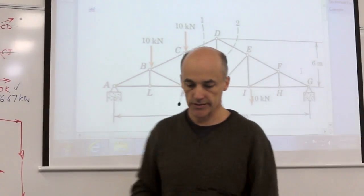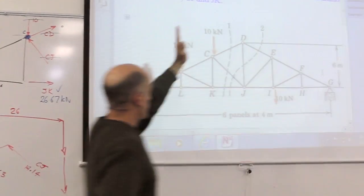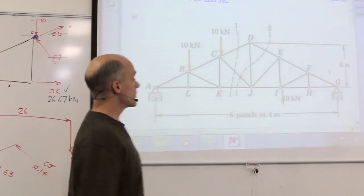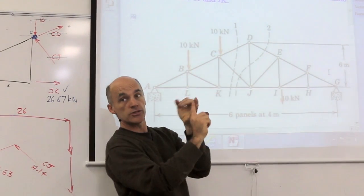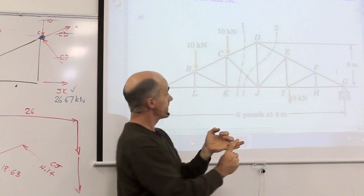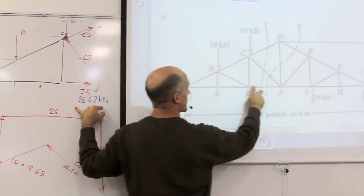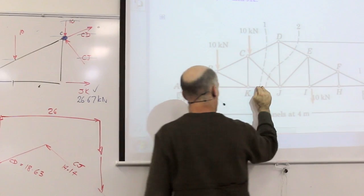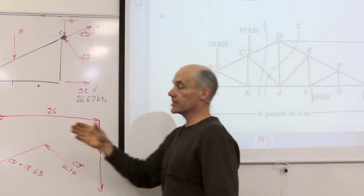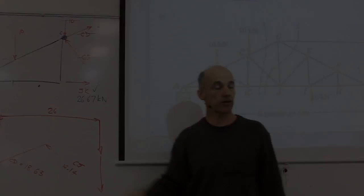That's the method of joints. You cut the truss. You then find a place to take a moment that will eliminate two of the unknown forces out of the three. You do the moment equation, that will find the other member, like JK for example. And once you've got one of them, you've only got two left to go, you can finish it off with a force polygon.